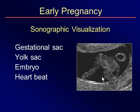Chronologically, if we scanned every day during a pregnancy, we would first see the gestational sac, next comes the yolk sac, then the embryo becomes visible, and then its heartbeat.